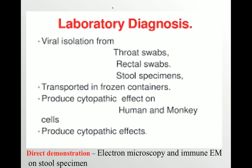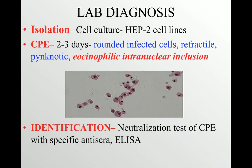Direct demonstration of the virus can also be done by electron microscopy or immune electron microscopy on stool specimens. Isolation is done on cell cultures, and the most commonly used cell culture is HEP2 — human epithelial cell lines made from laryngeal carcinoma.